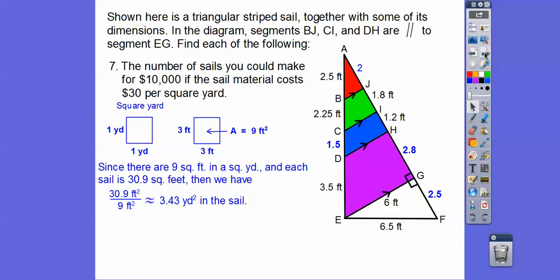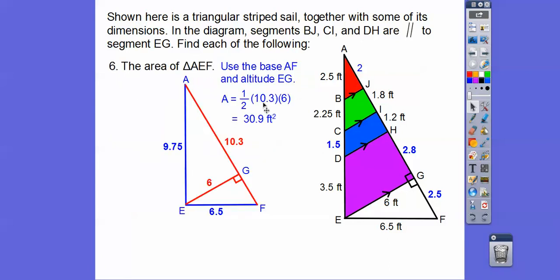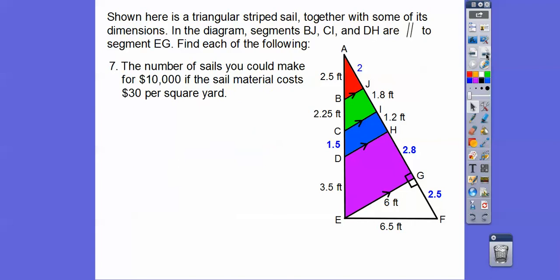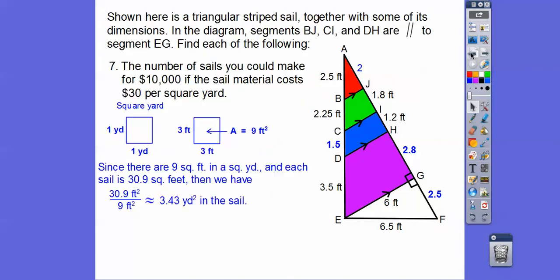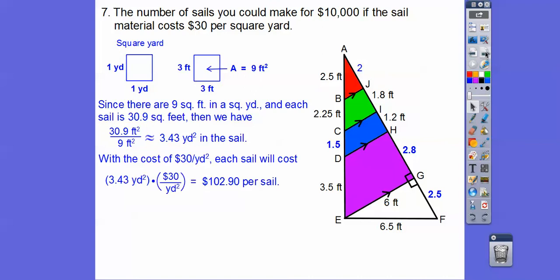So we take that 30.9 square feet and divide by how many square feet are in a square yard, and we get 3.43 square yards in the sail. Now what we're going to do, since it's $10,000 that we're going to spend and it's $30 per square yard, we're going to multiply 3.43 by 30 to find out how much it's going to cost for each sail. So we find out that it's $102.90 per sail.